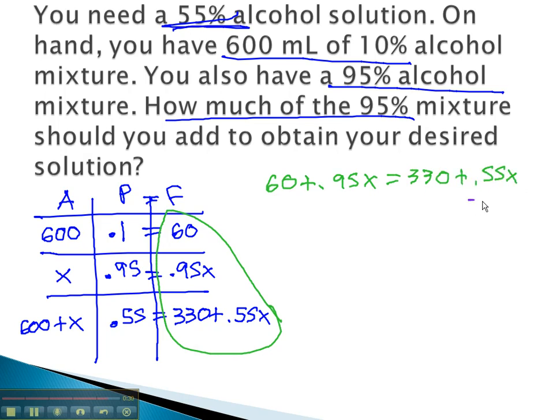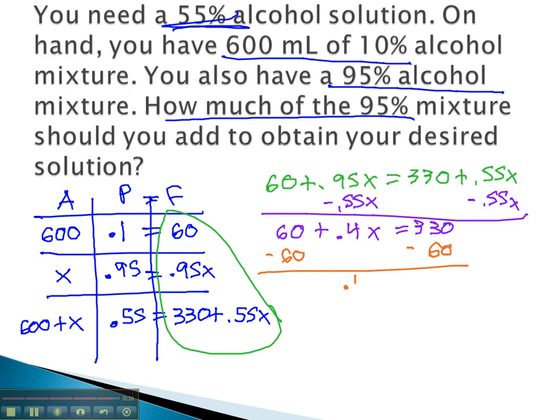Get the variable on the same side by subtracting 0.55x, and we get 60 plus 0.4x equals 330. Subtract 60 from both sides, and we get 0.4x equals 270. Dividing both sides by 0.4, and the amount that we need to add is 675 milliliters.